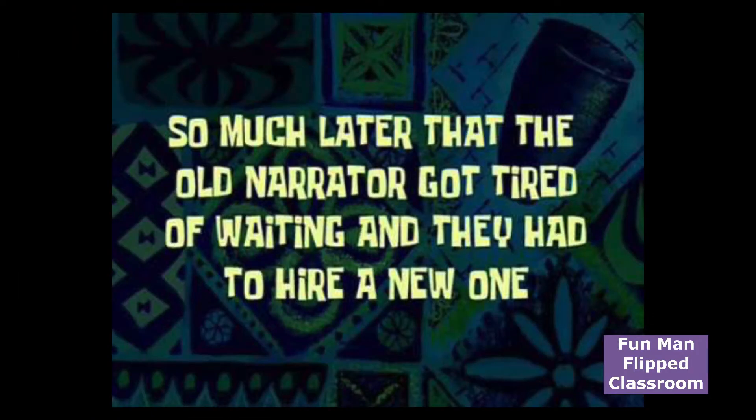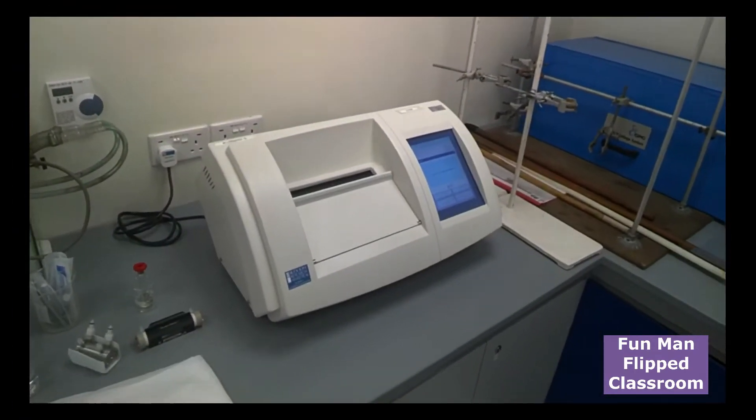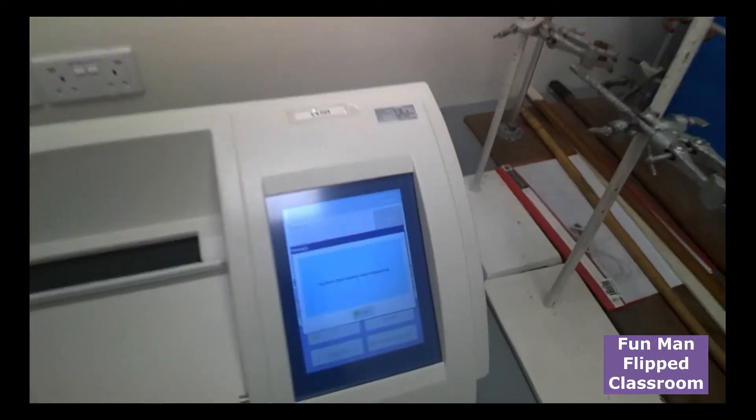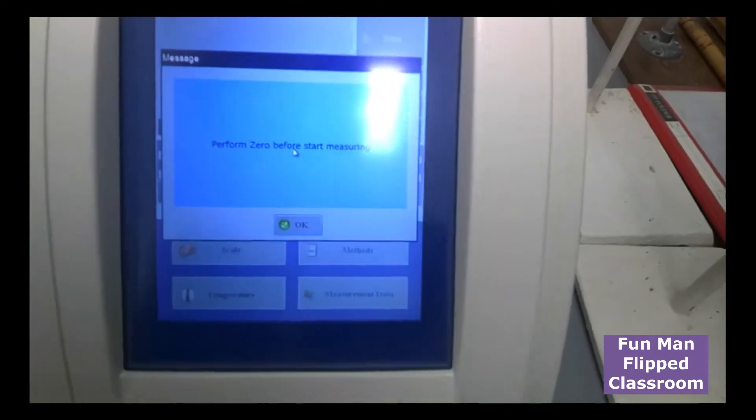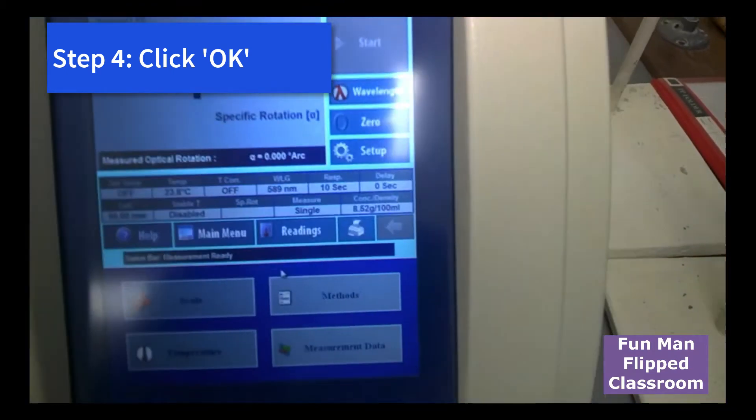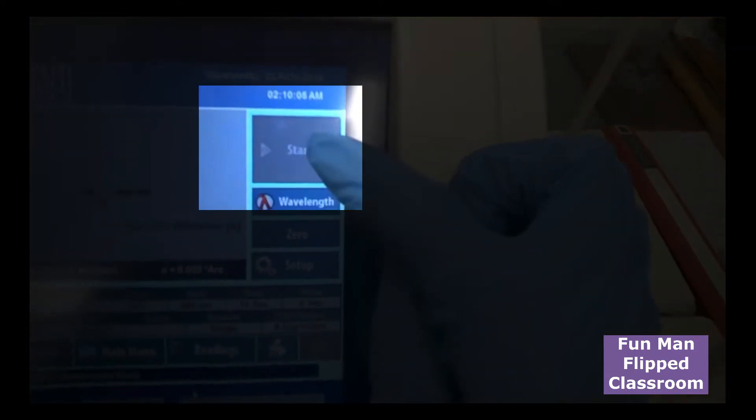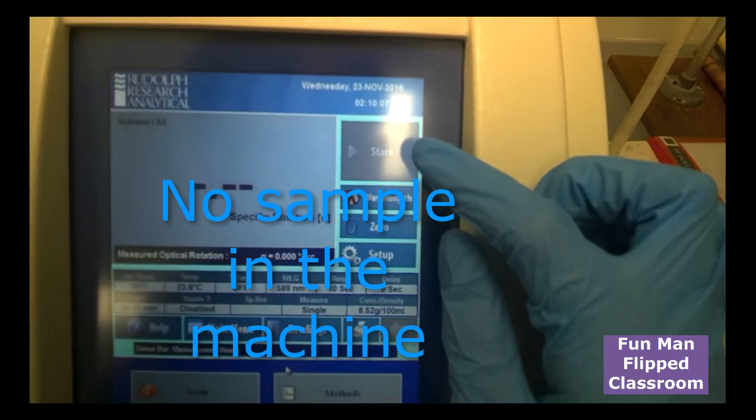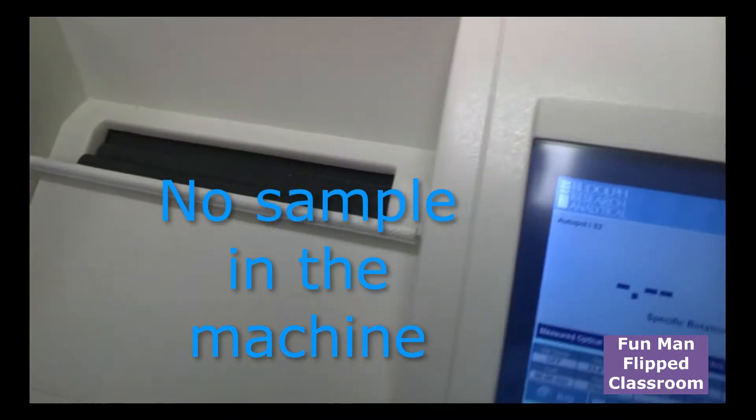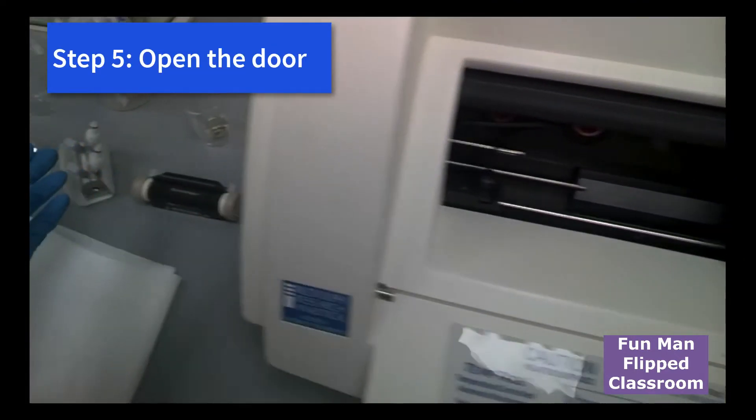So much later that the old narrator got tired of waiting and they had to hire a new one. Okay, so guys, now we are back. The machine has already warmed up. We can start the experiment. So you see on the screen, it says here that you got to perform zero before measurement. So we click OK. And you see the panel here. There's a control. The start button is now in grey. You can't click first because there's no sample inside the machine. Now you need to place the sample later on. Open the door and place the sample inside.